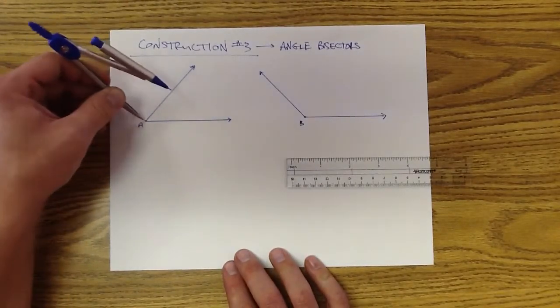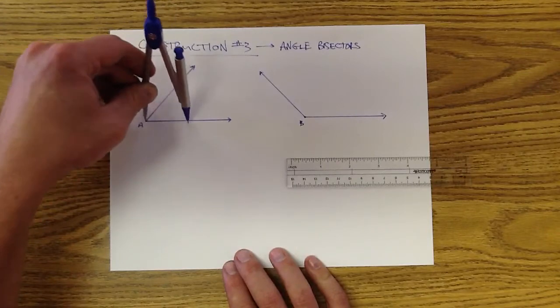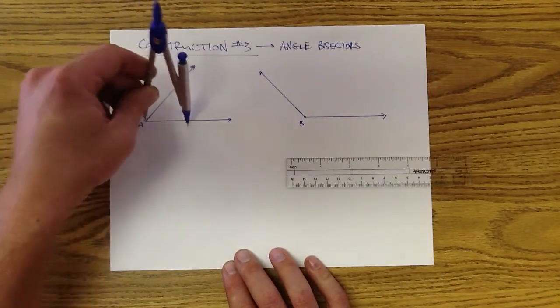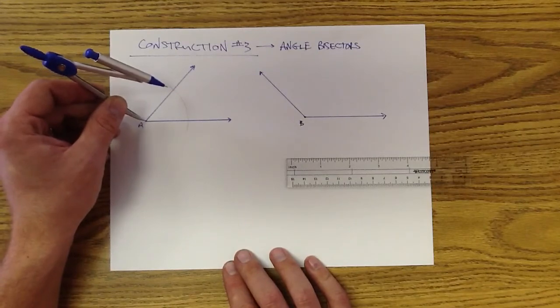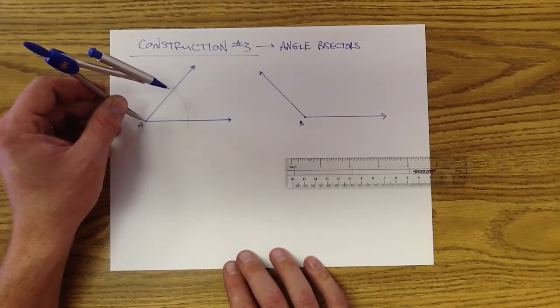The same basic ideas and principles apply. We're going to use the properties of congruent triangles to show this. Just like before when we were copying an angle, we want to make an arc that goes through both sides of our angle. It doesn't matter what the arc length is.